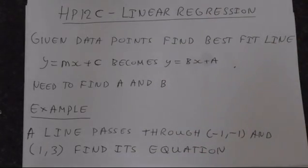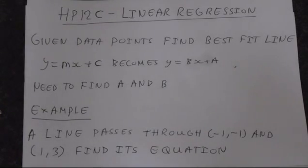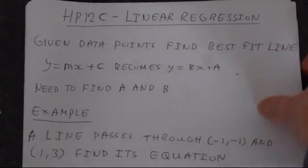The best way to understand this is to simply do an example. So we've got a line that passes through (-1, -1) and (1, 3). Find its equation. Let's just do that.